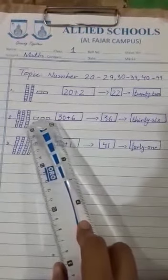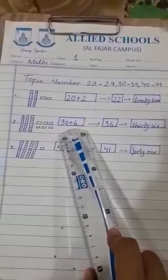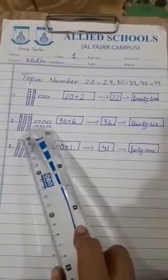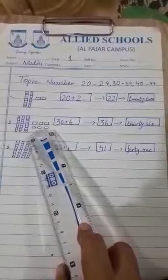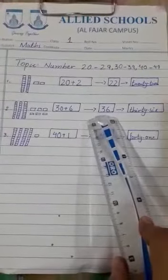How many ones we have: 1, 2, 3, 4, 5, 6. Write 6 in the box. 10, 20, 30, 31, 32, 33, 34, 35, 36. And the number is 36.